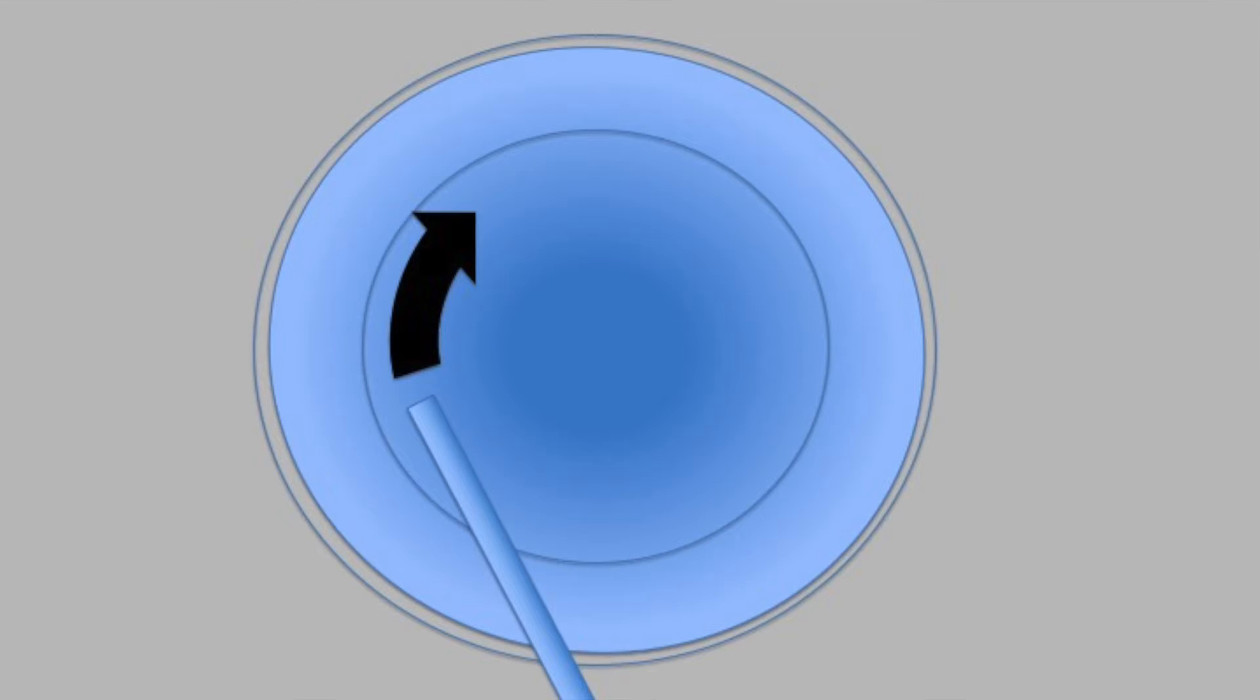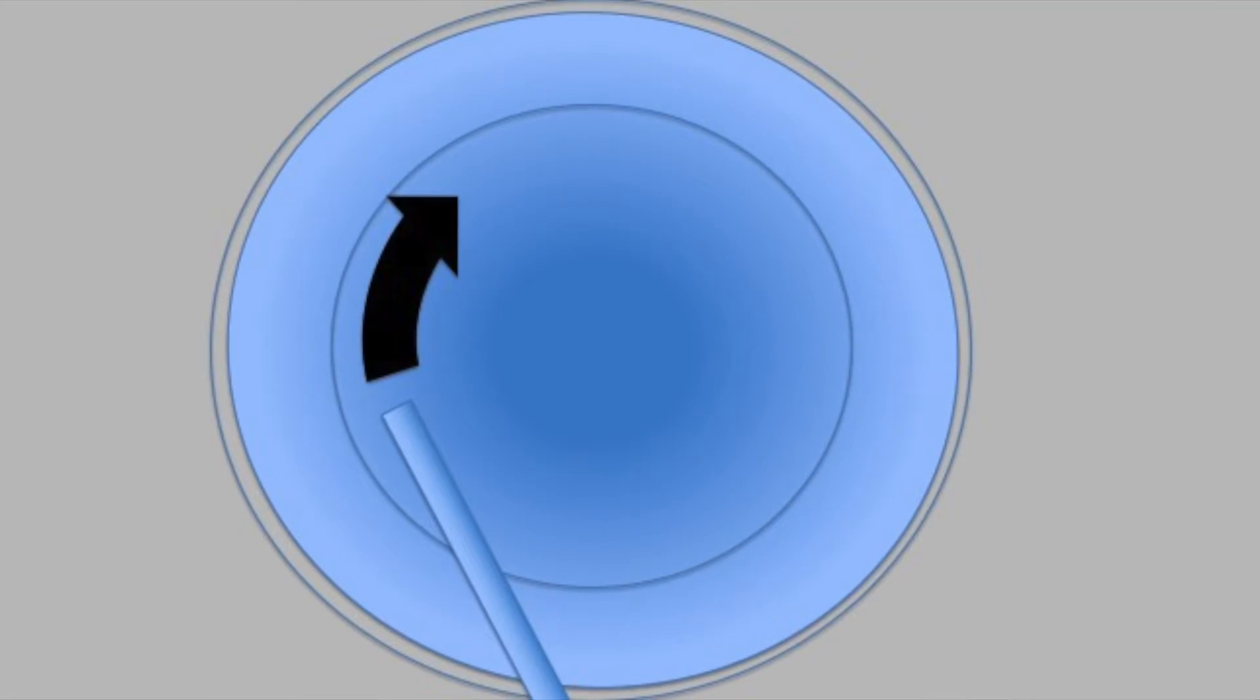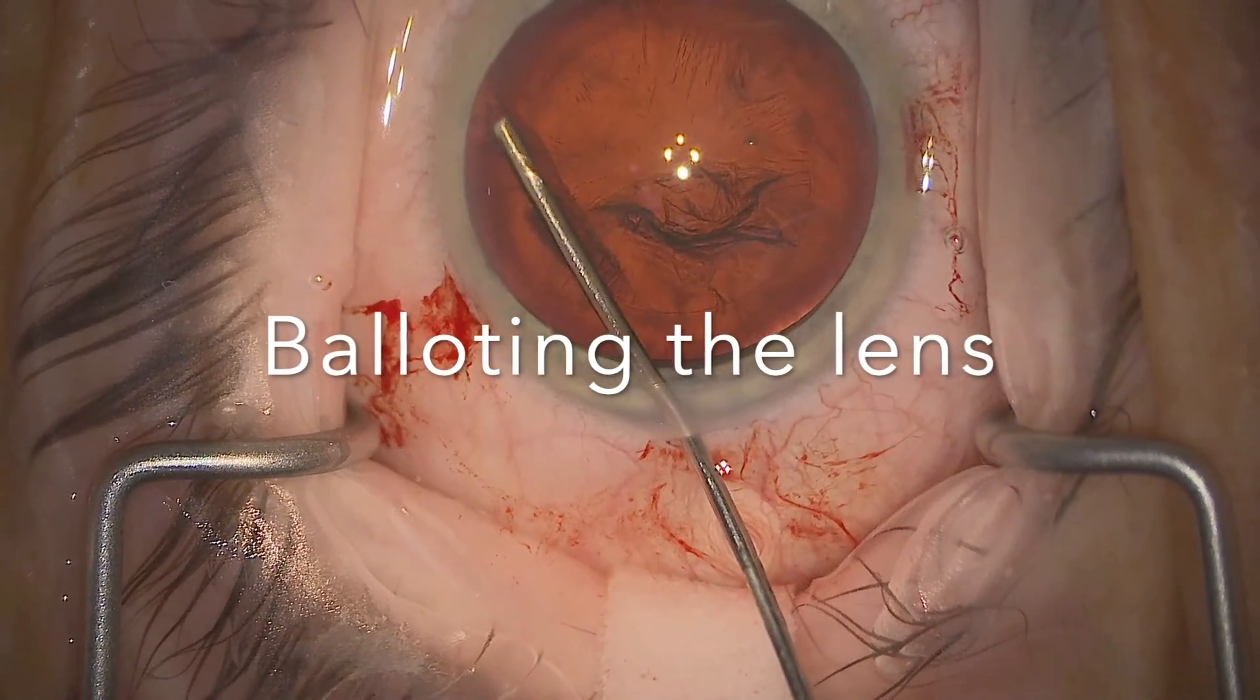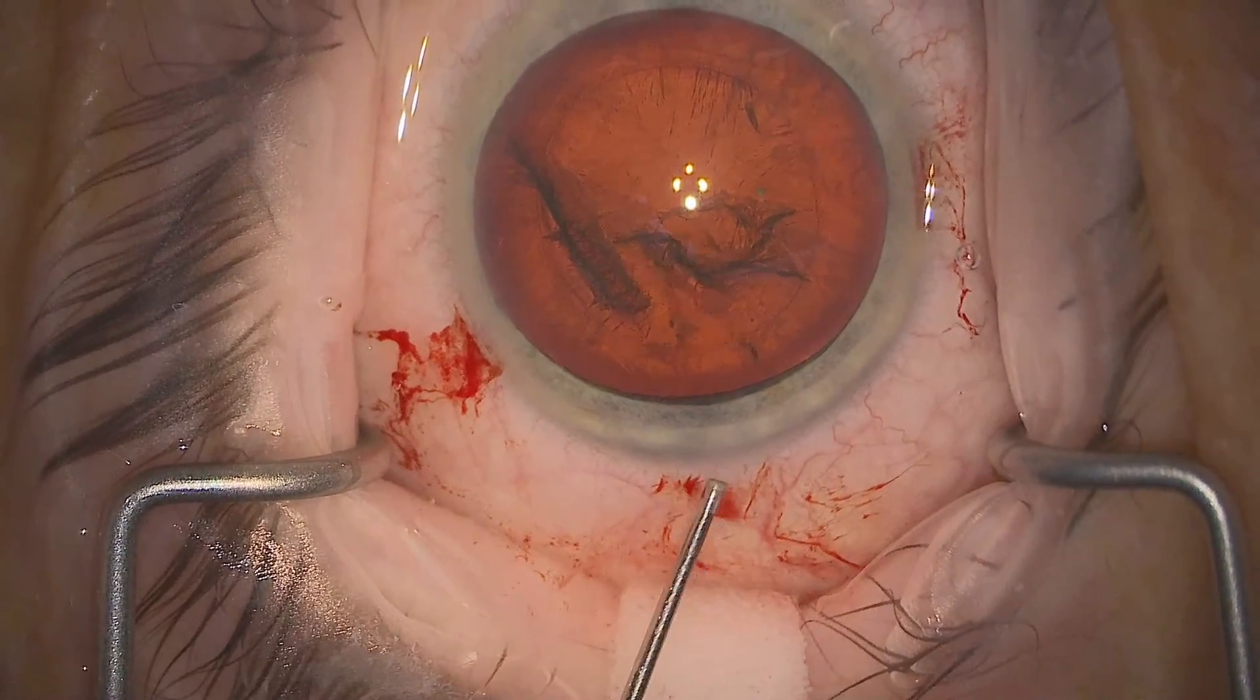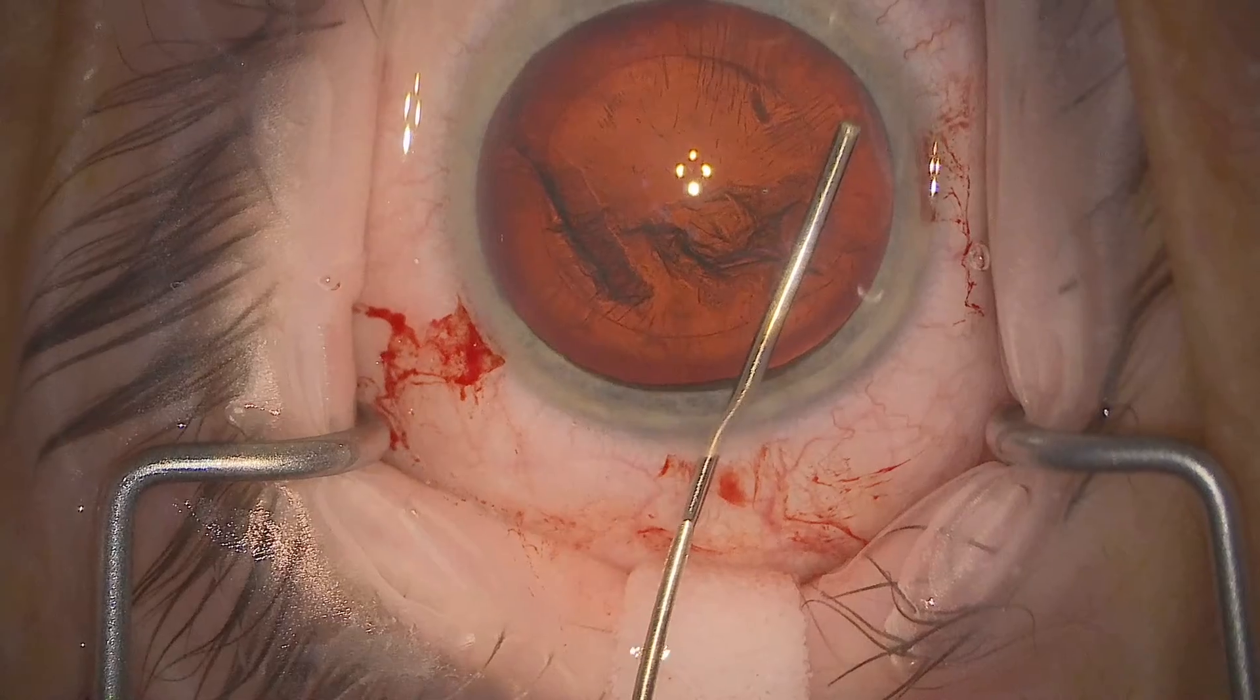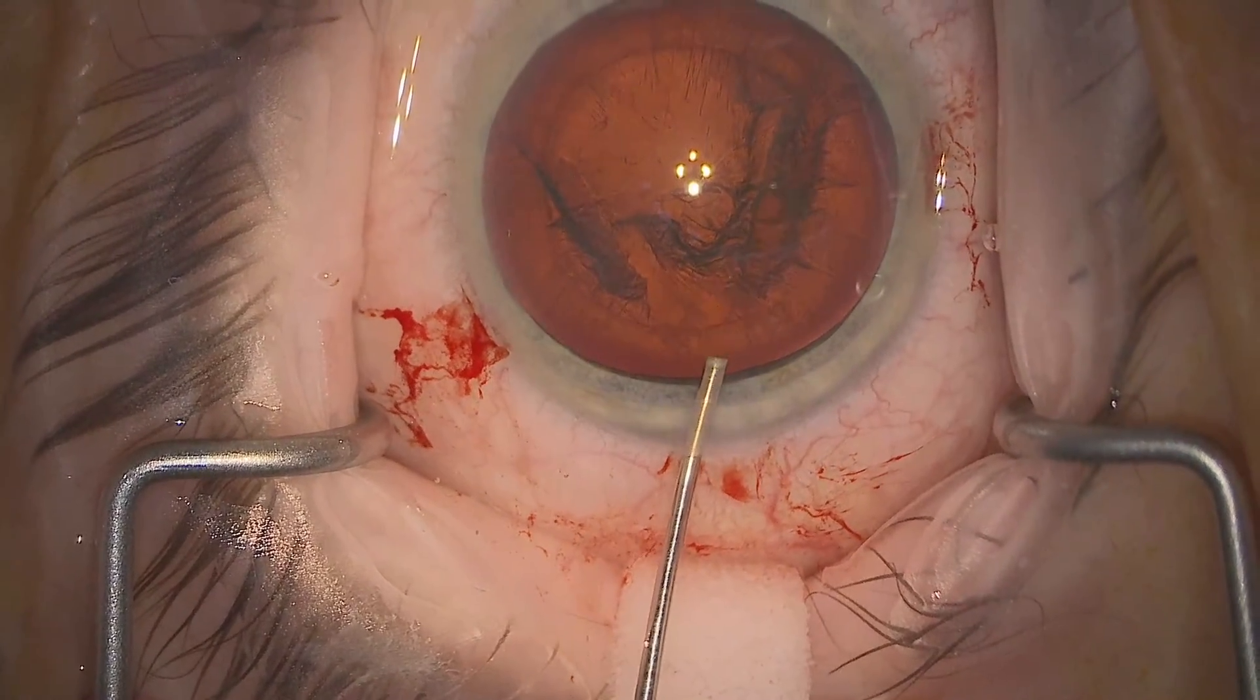Some surgeons teach rotating the lens with the hydrodissection cannula to confirm that it's free, but that's rather stressful for the zonules. I'm rather against rotating the lens in a soft eye whenever you can avoid it, and I think this blotting maneuver which we're showing you here is equally effective in demonstrating the lens is free and completely hydrodissected. As I said to you at the beginning, the more work you do with the hydrodissection, the less work you do rotating the lens subsequently, so it's nice to go to both sides and repeat this blotting maneuver to make sure that the lens is free.